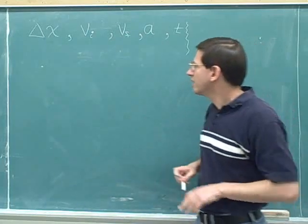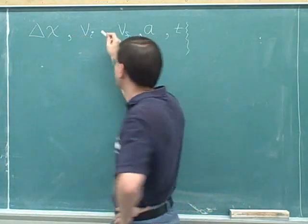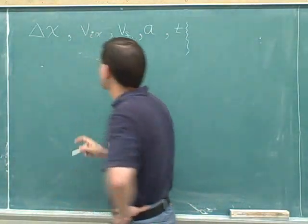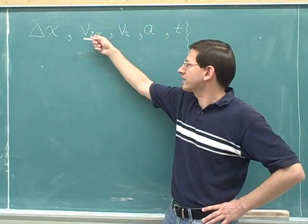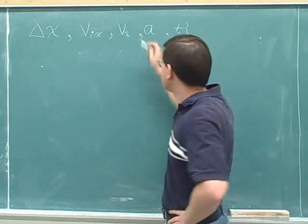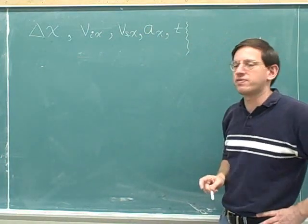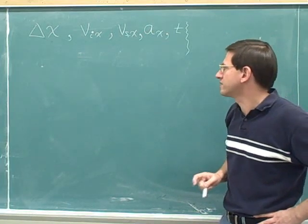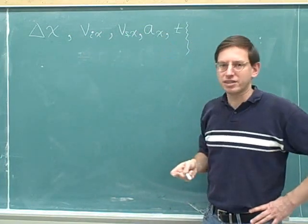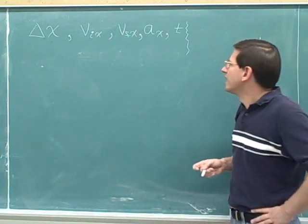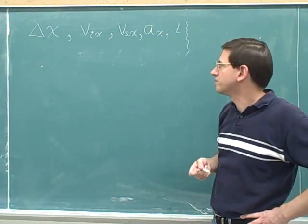Let me write out the variables more carefully. Since we really have an x and a y component, it's not good enough to talk about the initial velocity — I should be talking about the initial x velocity. I've written an x subscript here. These are all just for the x component: the initial x, the final x, and a sub x. There's no subscript on the time — that doesn't get broken down into components.